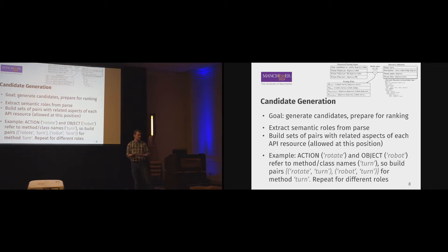We observed that semantic roles such as action and object, like rotate or robot from our example, tend to refer to methods and class names such as turn or robot. So we build pairs of these semantic roles such as rotate-turn and robot-turn for the method turn. That would be our feature set for this method. We repeat that for different semantic roles. For example, if we have values in our text, that would probably refer to parameters. If we have other objects, that would probably refer to parameter names. We over-generate this set of pairs to be used for ranking later on.